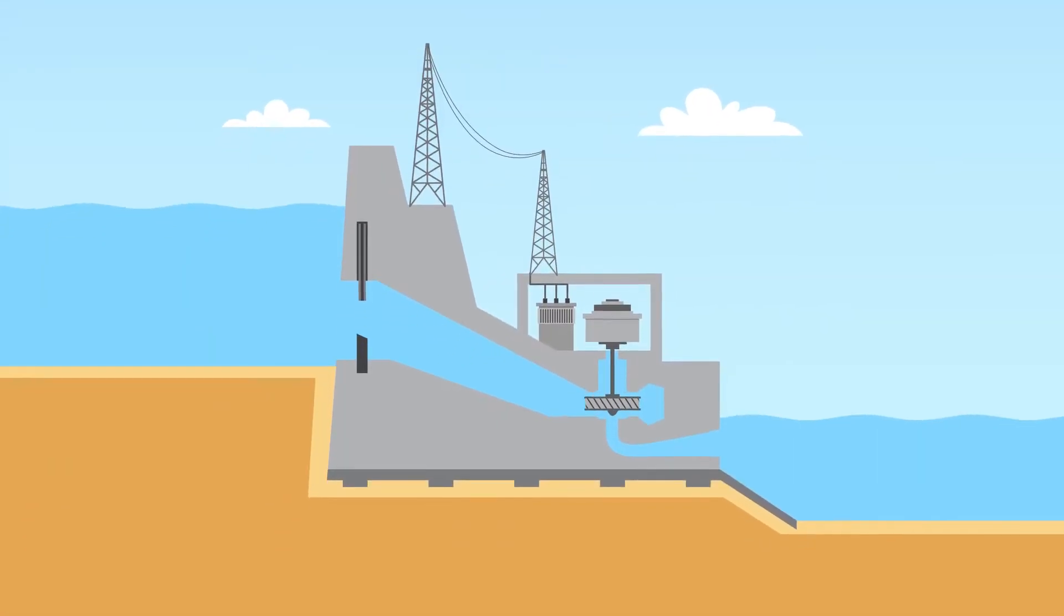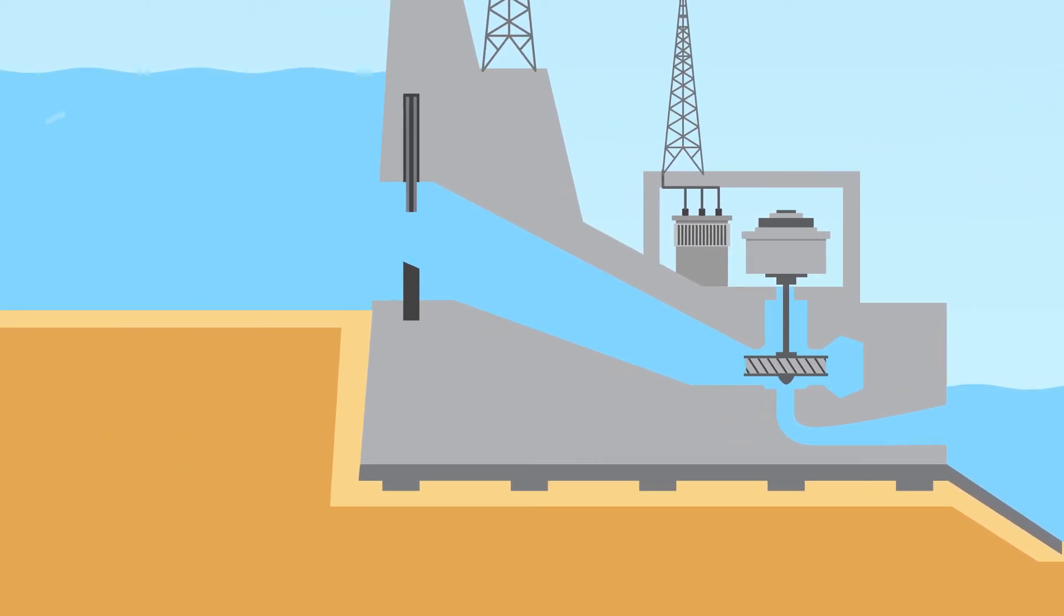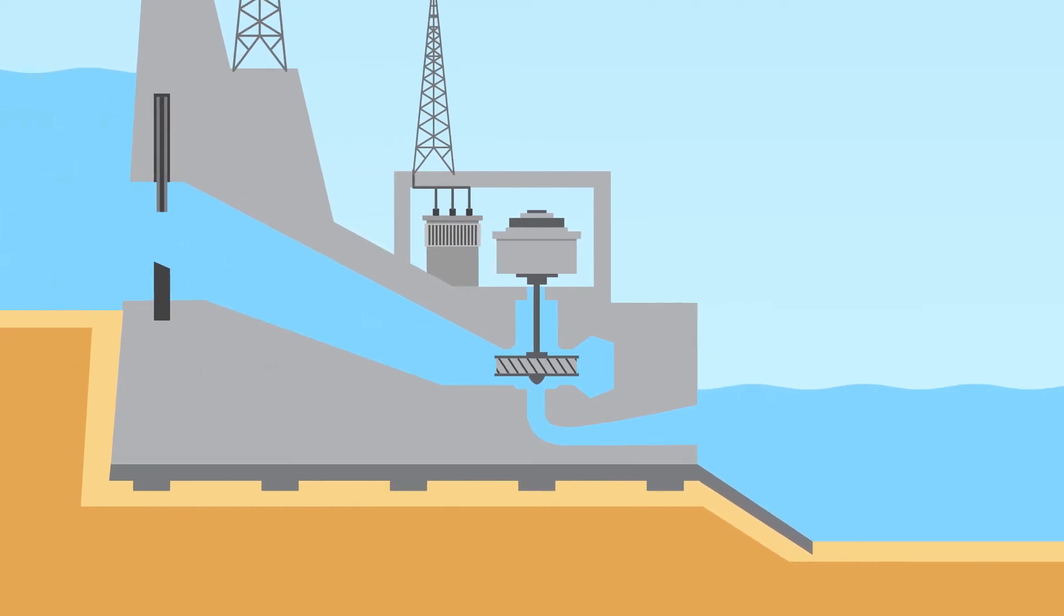There are two main types of hydro turbines: impulse and reaction. The type of hydropower turbine selected for a project is based on the height of standing water, known as head, and the flow or volume of water. Other deciding factors include how deep the turbine must be set, efficiency, and cost.